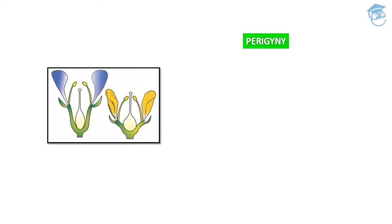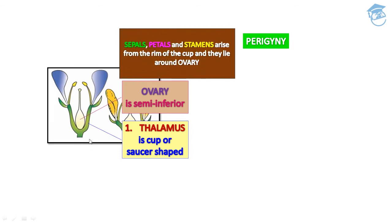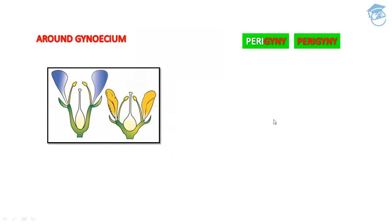In perigyny, the thalamus is cup- or saucer-shaped; the ovary is semi-inferior because it sits within the thalamus. Sepals, petals, and stamens arise from the rim of the cup and lie around the ovary. 'Peri' means around and 'gyny' means gynoecium — the gynoecium is present within the cup or rim of the thalamus. Example: Rose.